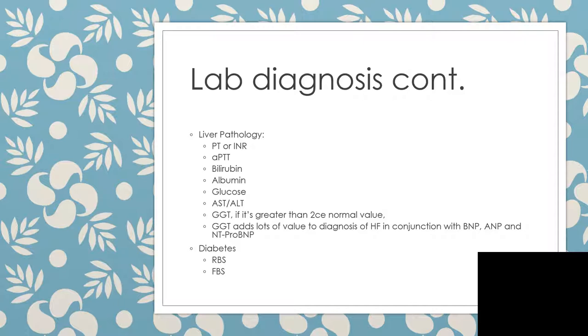So we need to assess the liver by doing PT or INR — they are the same — plus APTT, bilirubin, albumin, glucose, AST, ALT, and GGT.